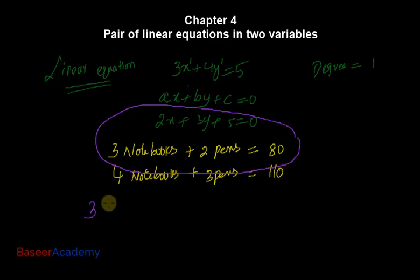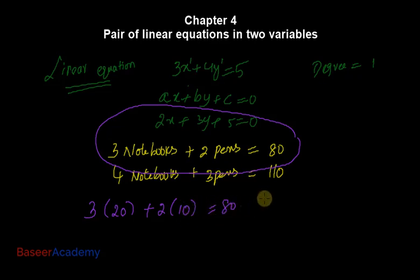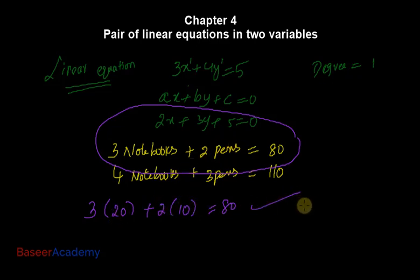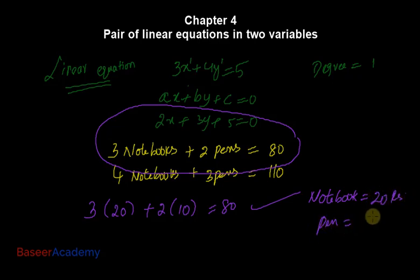Rubina guessed that the cost of one notebook could be 20 rupees and the cost of one pen could be 10 rupees — that way the total would be 80 rupees. 3 × 20 = 60, 2 × 10 = 20, and 60 + 20 = 80. So Rubina guessed notebook = ₹20 and pen = ₹10.